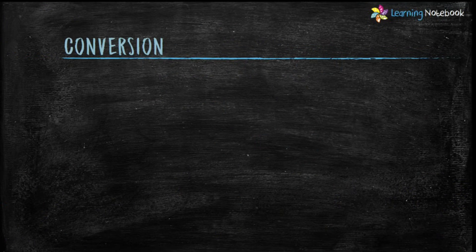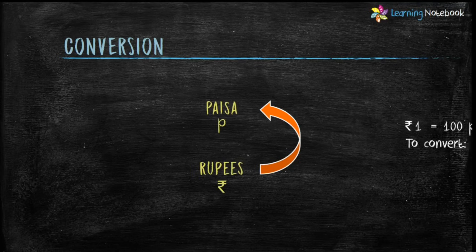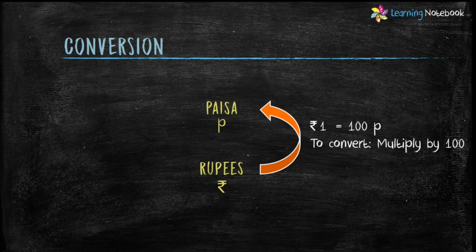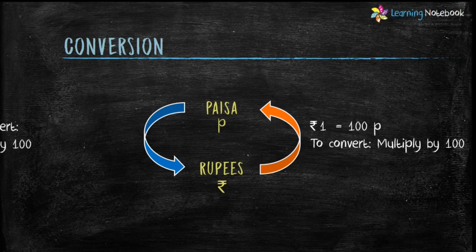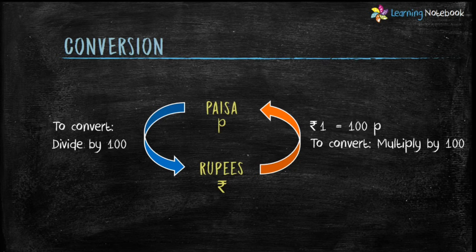As we all know, Indian currency is rupees and paise, and one rupee equals to hundred paise. So to convert rupees into paise, multiply by hundred, and to convert paise into rupees, divide by hundred.